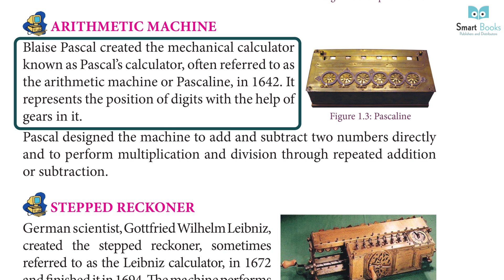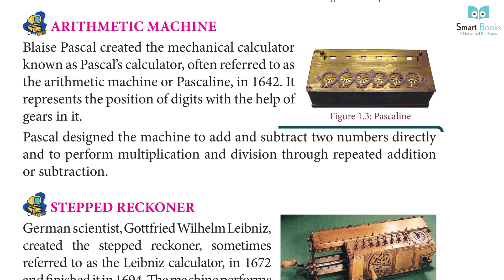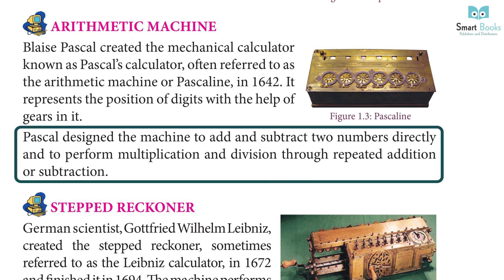Arithmetic Machine: Blaise Pascal created the mechanical calculator known as Pascal's Calculator, often referred to as the Arithmetic Machine or Pascaline, in 1642. It represents the position of digits with the help of gears. Pascal designed the machine to add and subtract two numbers directly, and to perform multiplication and division through repeated addition or subtraction.